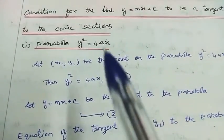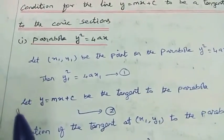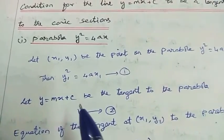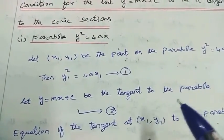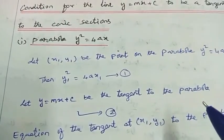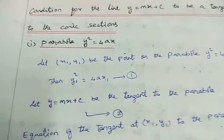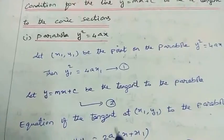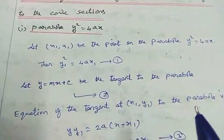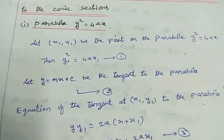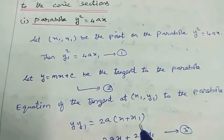Equation of the line: let y equal to mx plus c be the tangent to the parabola. That is equation number 2. The equation of the tangent at the point x1, y1 to the parabola y square equal to 4ax is yy1 equal to 2a into x plus x1.